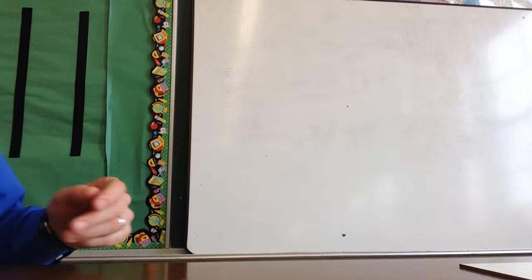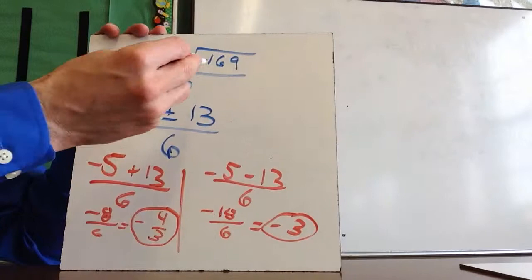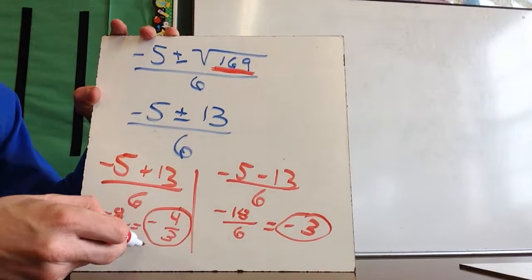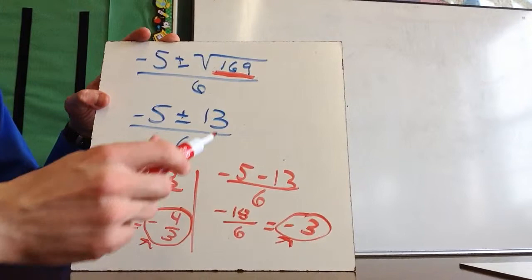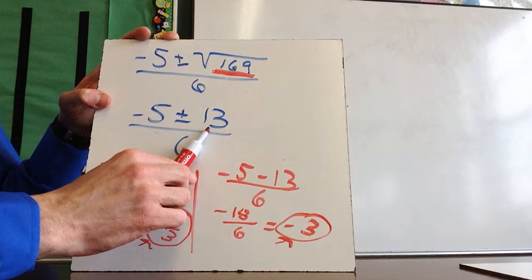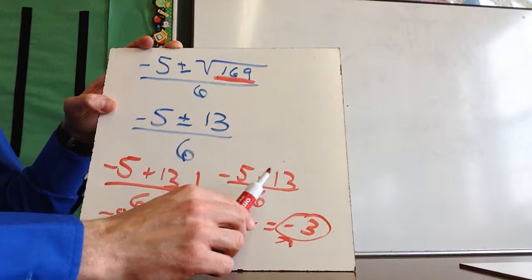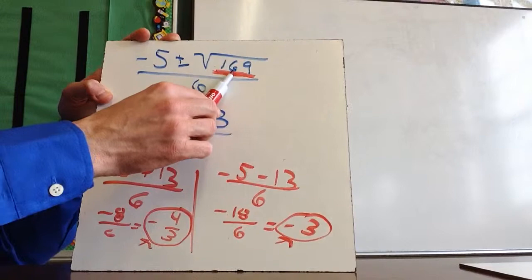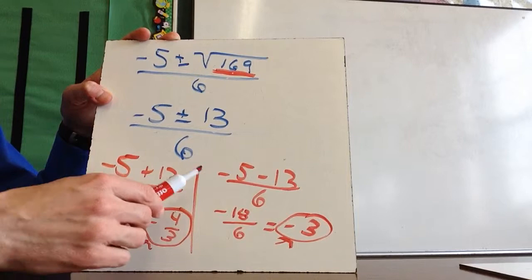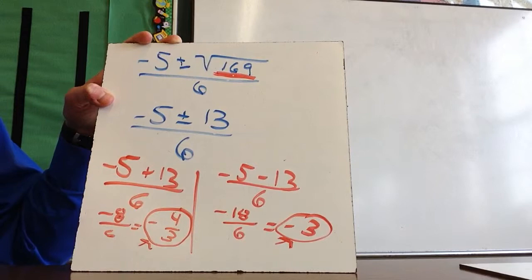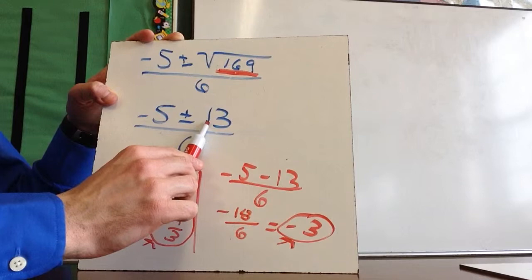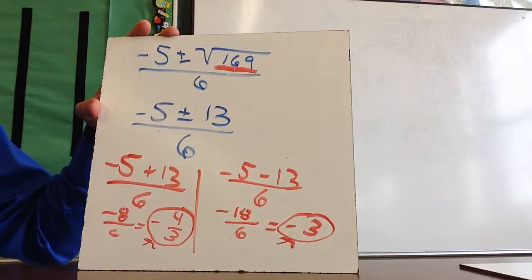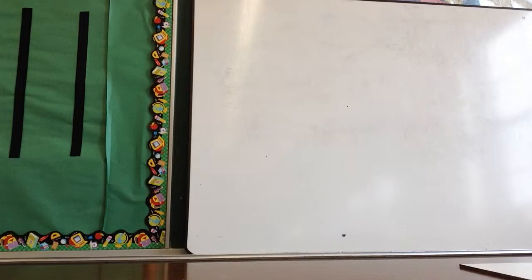In the last problem the discriminant was 169, a positive number, and we got two real solutions. If the discriminant were zero, you'd get negative 5 plus zero over 6 and negative 5 minus zero over 6 — both the same answer, negative 5 sixths, which is why we say one real solution. If it were negative 169, there's no possible solution — no answer exists, so no solution to the original problem.